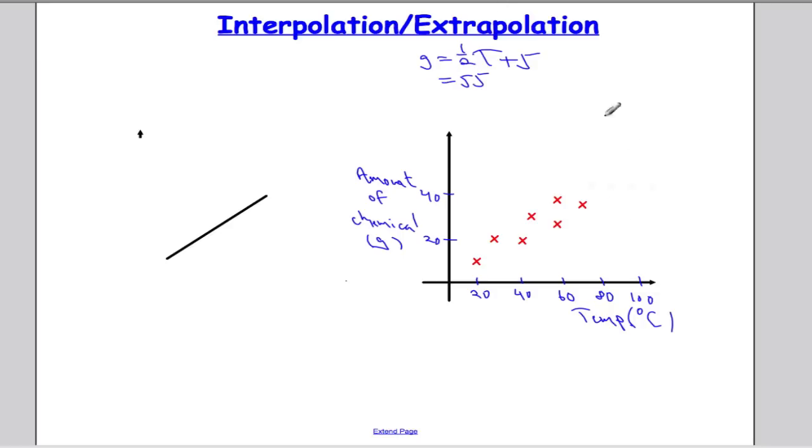However that's extrapolation because it's outside of the data set. And that can be risky because it may not always hold a linear relationship. In this experiment as we can see it peaks at around 70 to 75 degrees and then it tends to tail off. So you will not get any more chemical the higher you increase the temperature. So that's extrapolation when we try and make estimates that's outside the data set.